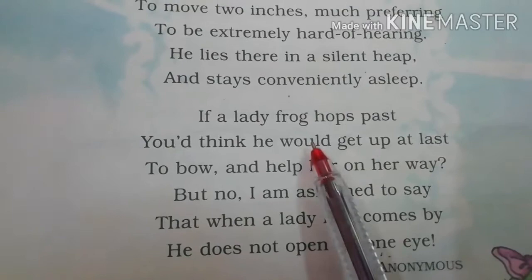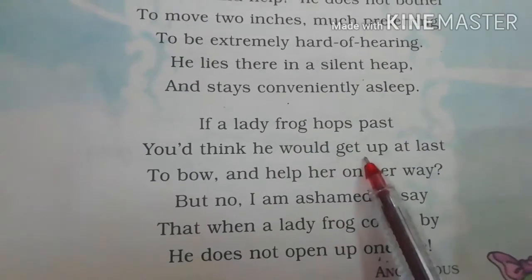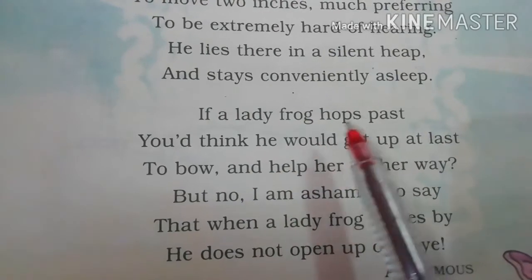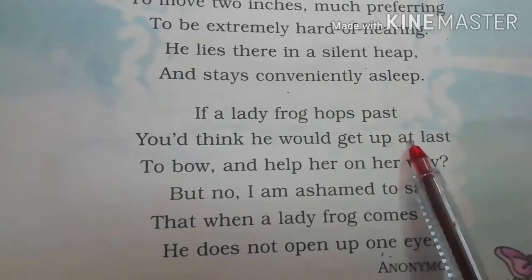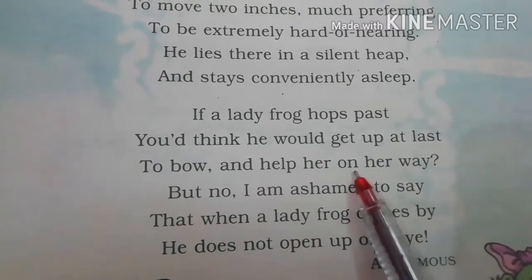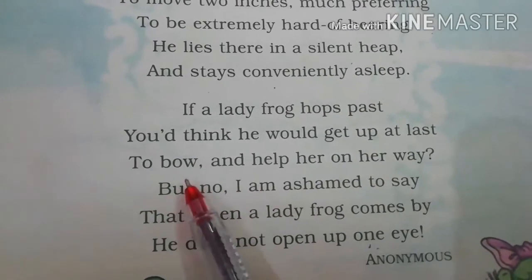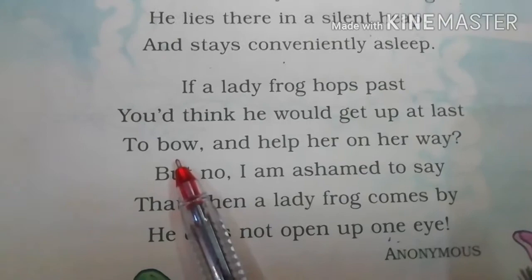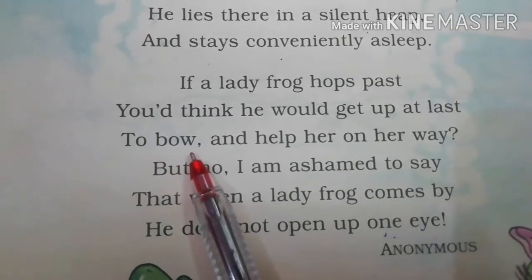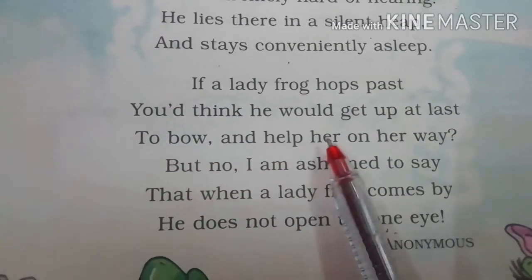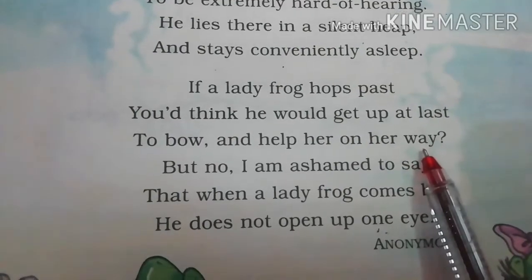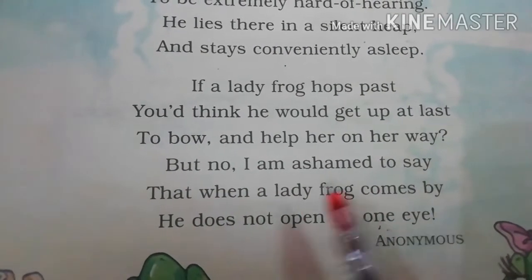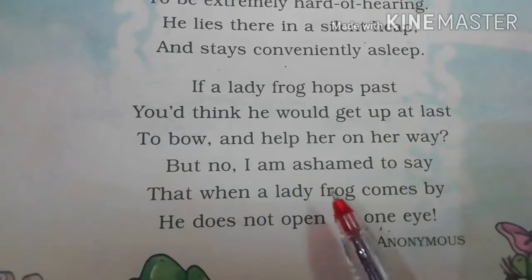और अगर कोई lady frog वहाँ से जाती, तो क्या वो उसको help करने के लिए उठता है? To bow and help her on her way — bow means अपनी गर्दन को थोड़ा आगे bend करना, respect के लिए। तो क्या वो उसको respect देने के लिए और रास्ता बताने के लिए खड़ा होता है?